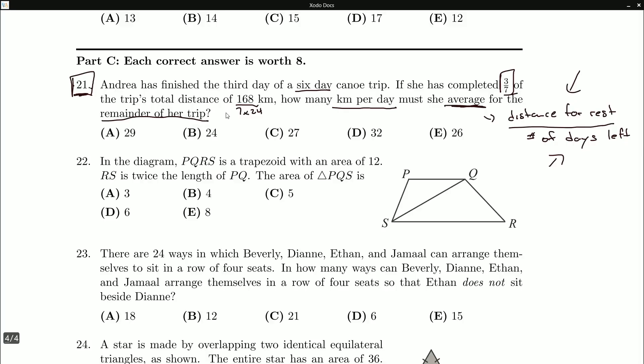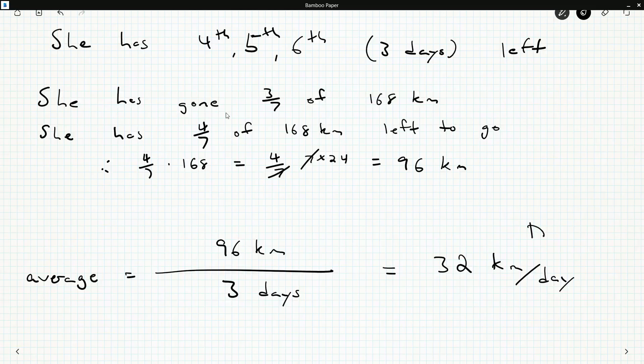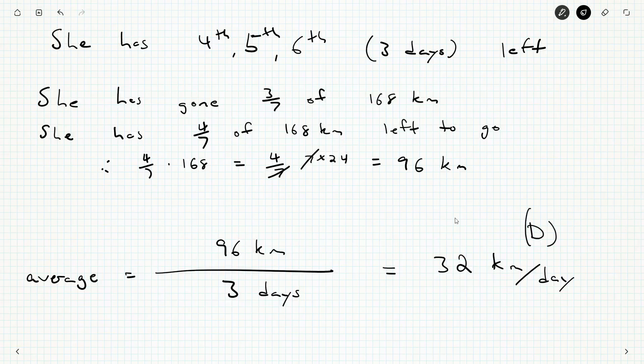So how many kilometers per day must she average for the remainder of her trip? And that's D, 32. We're going to flip the page in anticipation of question number 22. I will see you guys for that in the next video. Until then, have a wonderful day.